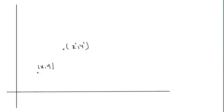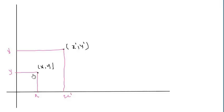Let us assume that this is our y-axis and this is x-axis. I have one point over here whose coordinate positions are x, y and I want to translate this point to a new location. We got this new location x', y' by adding this distance to x and this distance to y.